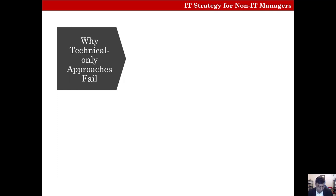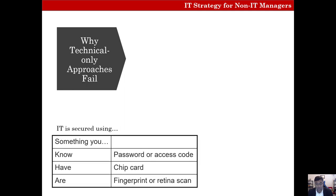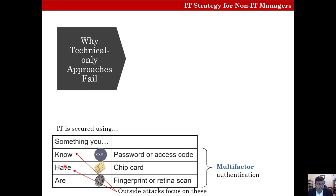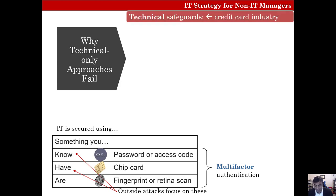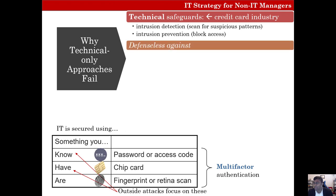You must grasp how IT is secured technically to appreciate why technical approaches fail. IT is secured using something you know — a password or access code — something you have — a card, ATM card, or smart card — and something you are — a fingerprint or retina scan. This is called multi-factor authentication. Outside attacks usually focus on getting your password or chip cards. Technical safeguards include credit card industry-inspired intrusion detection, which scans for suspicious patterns, and intrusion prevention, which blocks access as soon as these patterns occur.